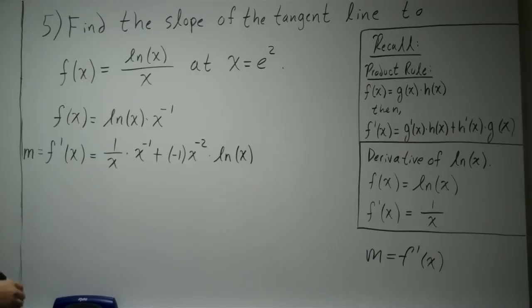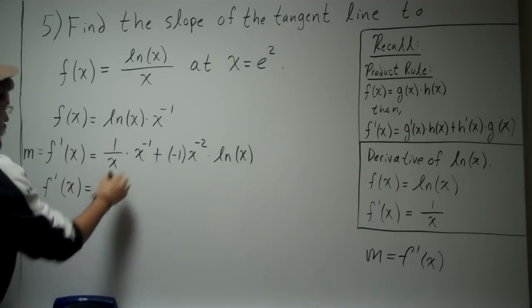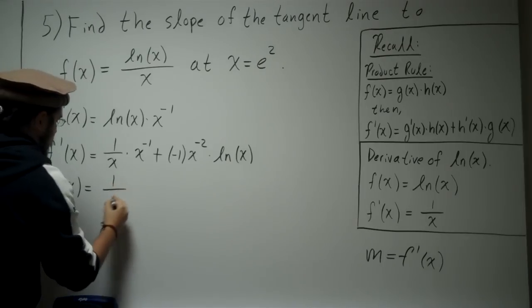Okay? So the calculus part is done. Now we can go ahead and do some algebra. We can bring this down, and we have x times x, x squared. So that's 1 over x squared.